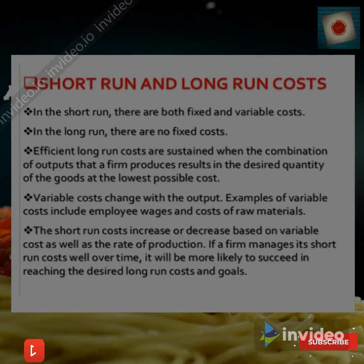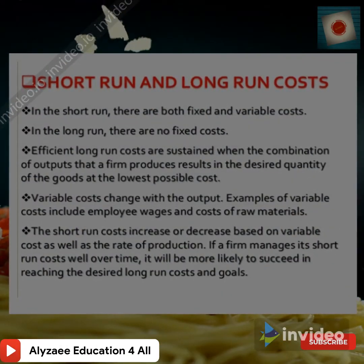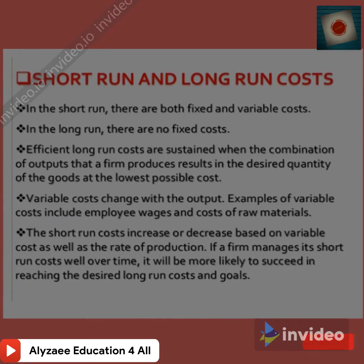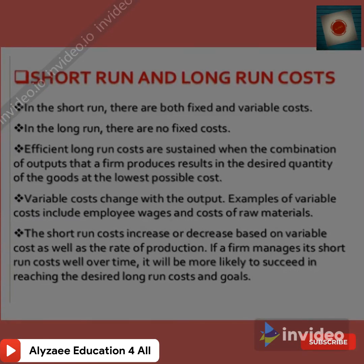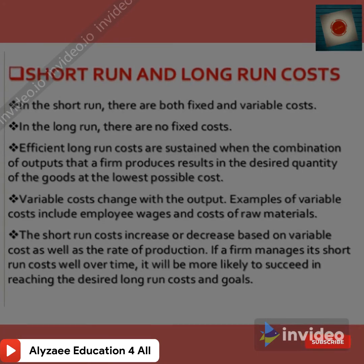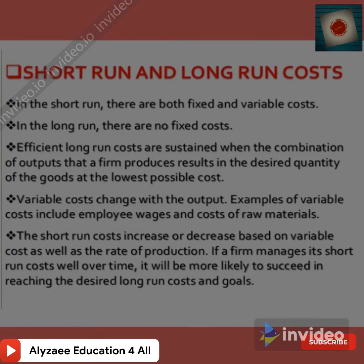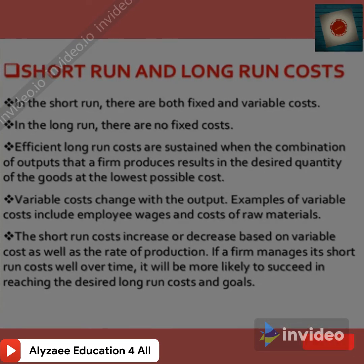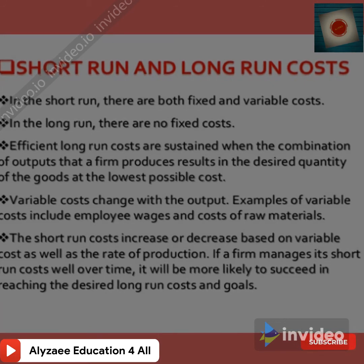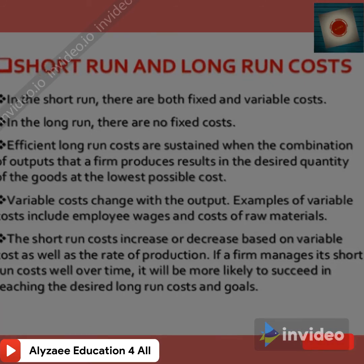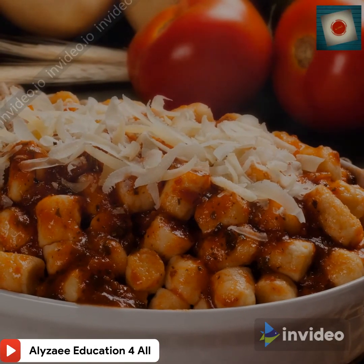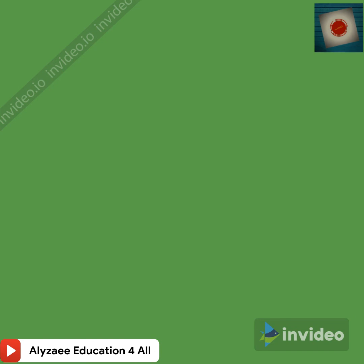To summarize: in the short run there are both fixed and variable costs; in the long run there are no fixed costs. Efficient long run costs are achieved when the combination of outputs results in the desired quantity of goods at the lowest possible cost. Variable costs — such as raw materials, security cameras, trucking, and maintenance — change with output. If a firm manages short run costs well, it will more likely succeed in reaching its desired long run cost goals. This concludes this lecture; in the next Stream 3 we will discuss costs in further detail.